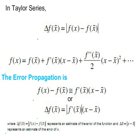Where delta f of x-bar equals the absolute value of f of x minus f of x-bar represents an estimate of the error of the function, and delta x-bar equals the absolute value of x minus x-bar, which represents an estimate of the error of x.